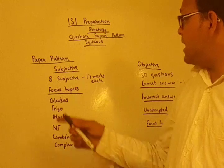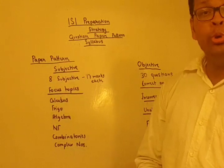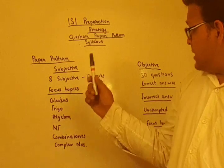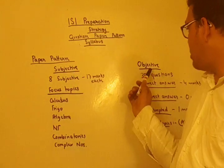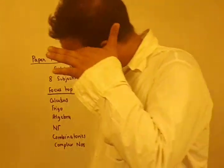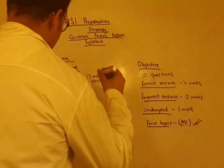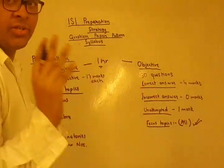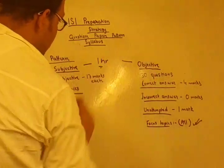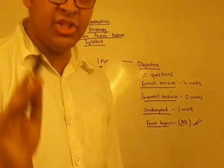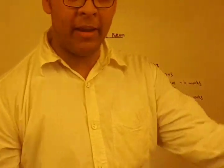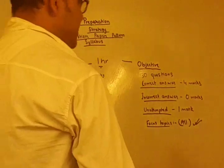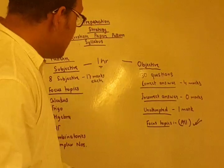The paper pattern of the ISI entrance exam involves two separate papers: a subjective and an objective part. There is a one-hour gap between them. You first attend the objective paper, then get a one-hour lunch break, after which you return to your seats for the subjective paper.